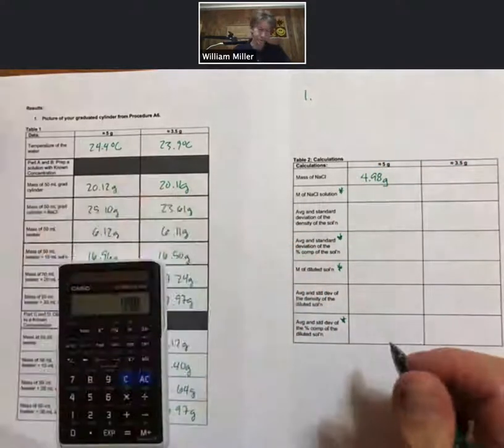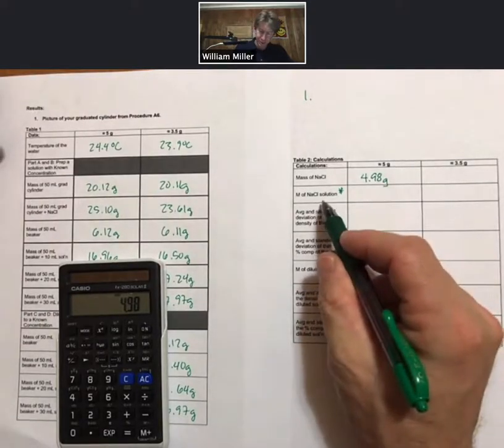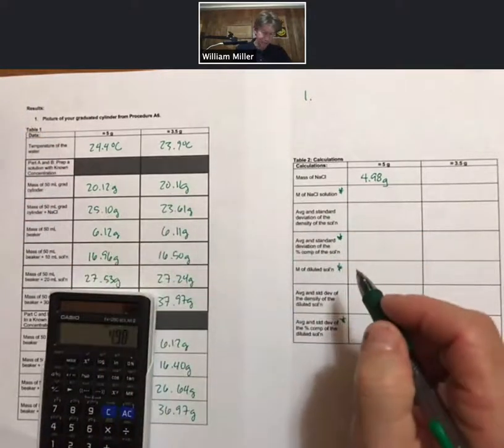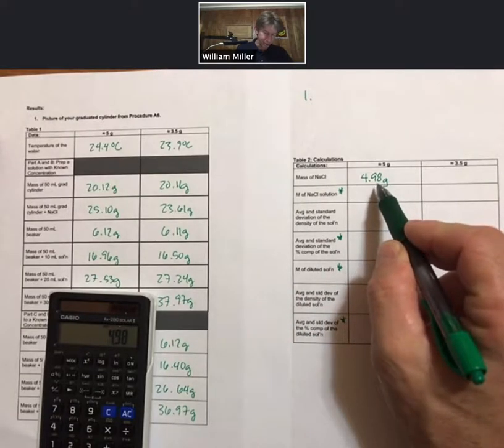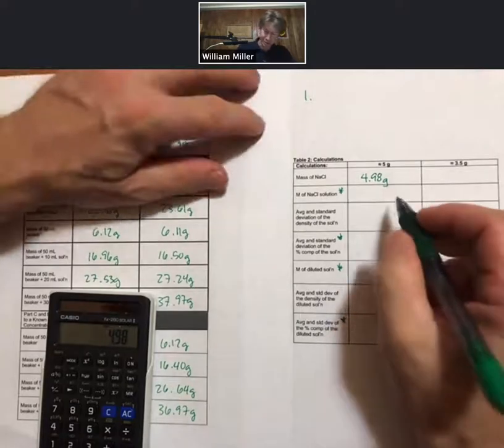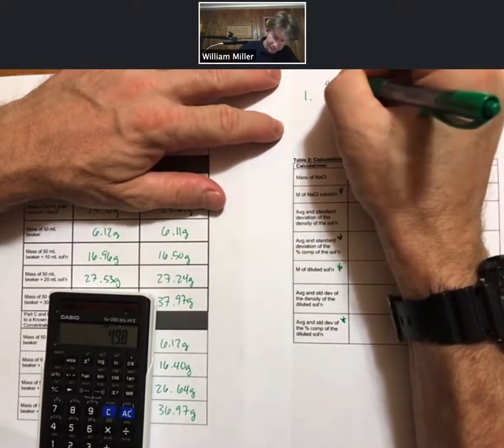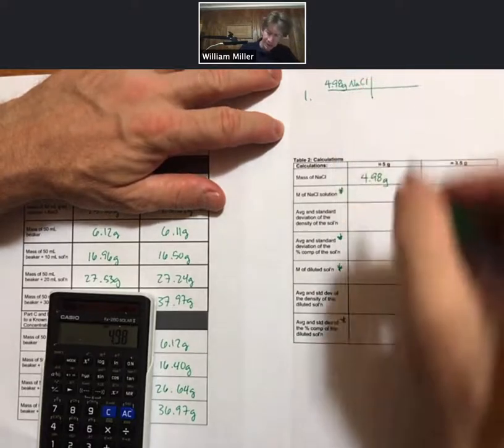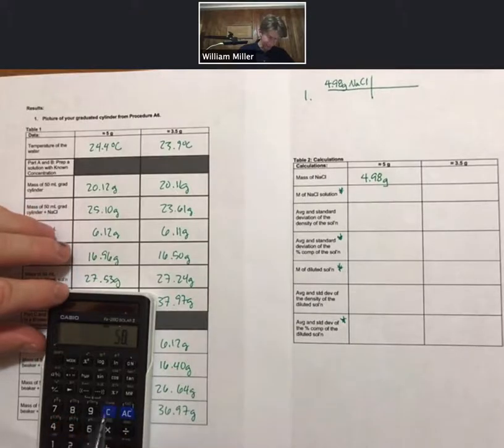Which of course I can turn into moles. And that's what I'll need for molarity of sodium chloride. And then every single time I put that in 50 milliliters, 4.98 grams. And I'll turn that into moles first.